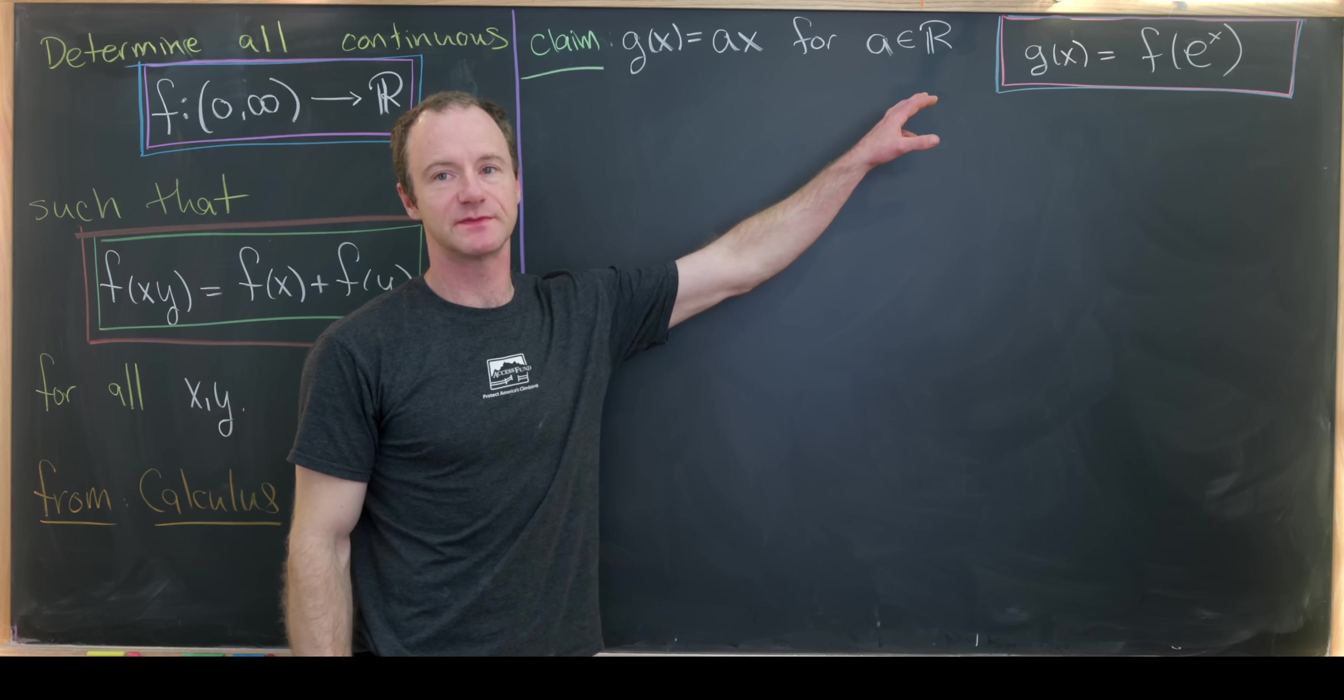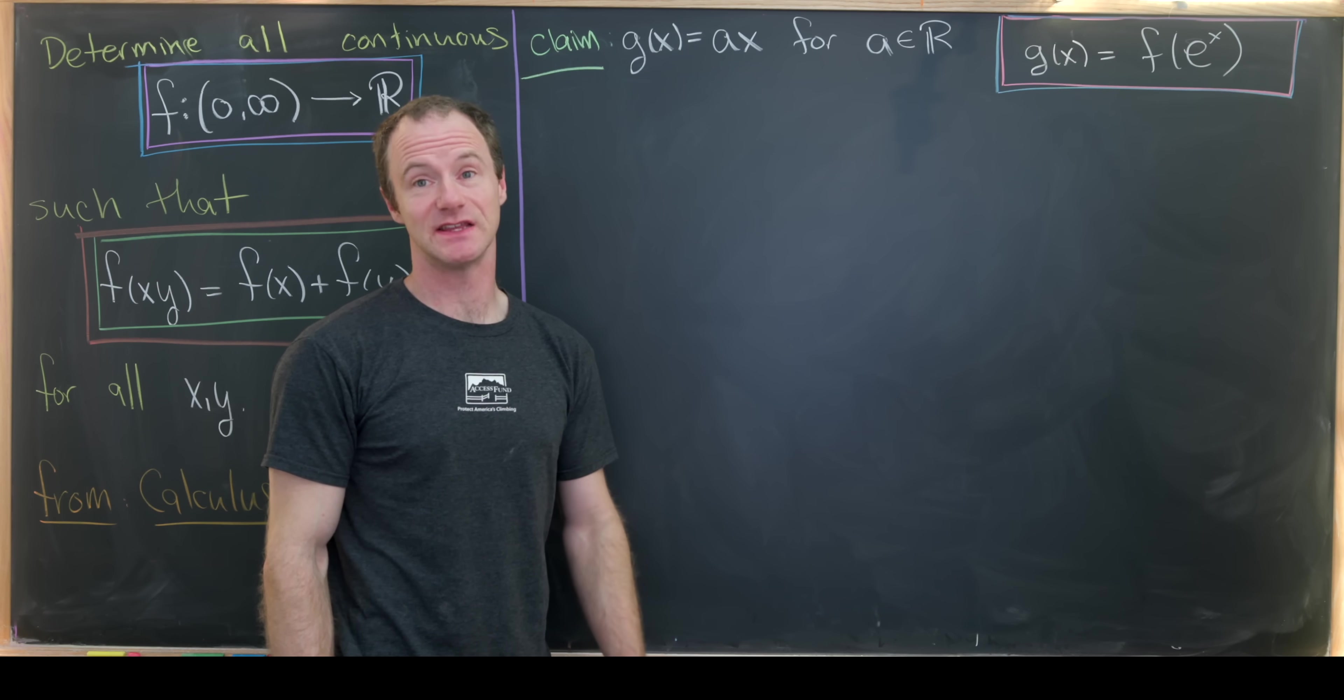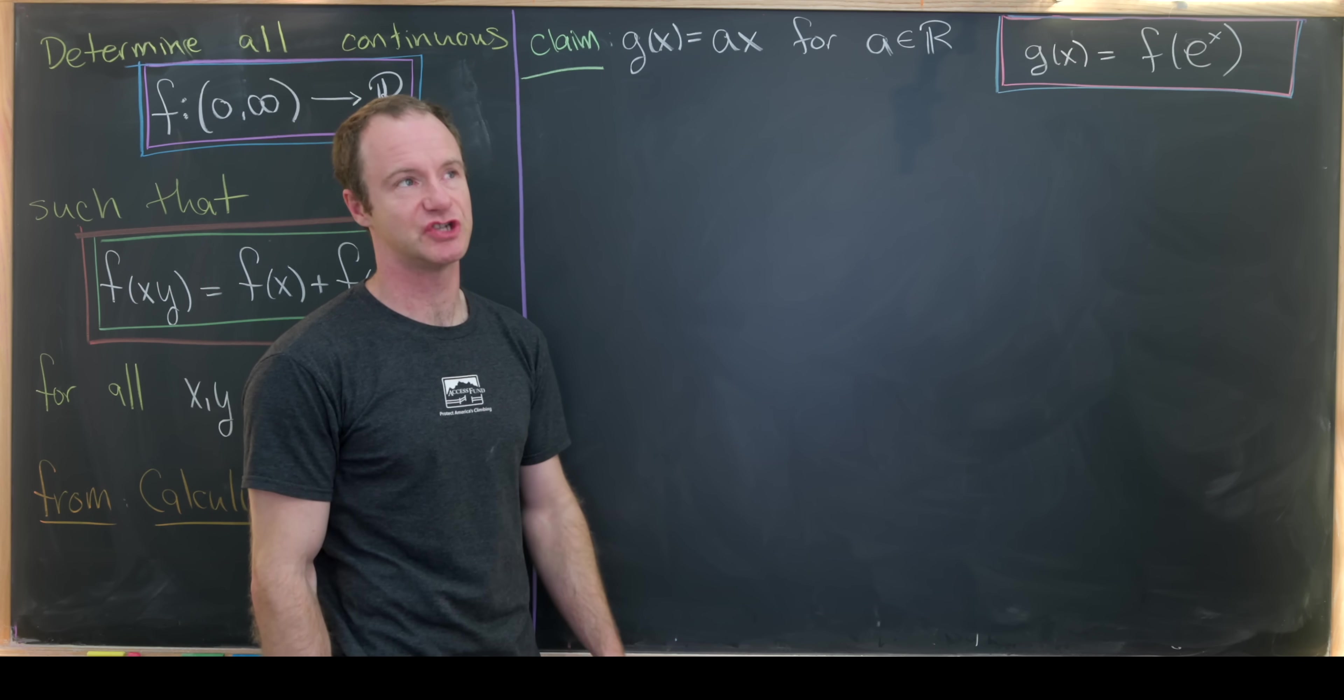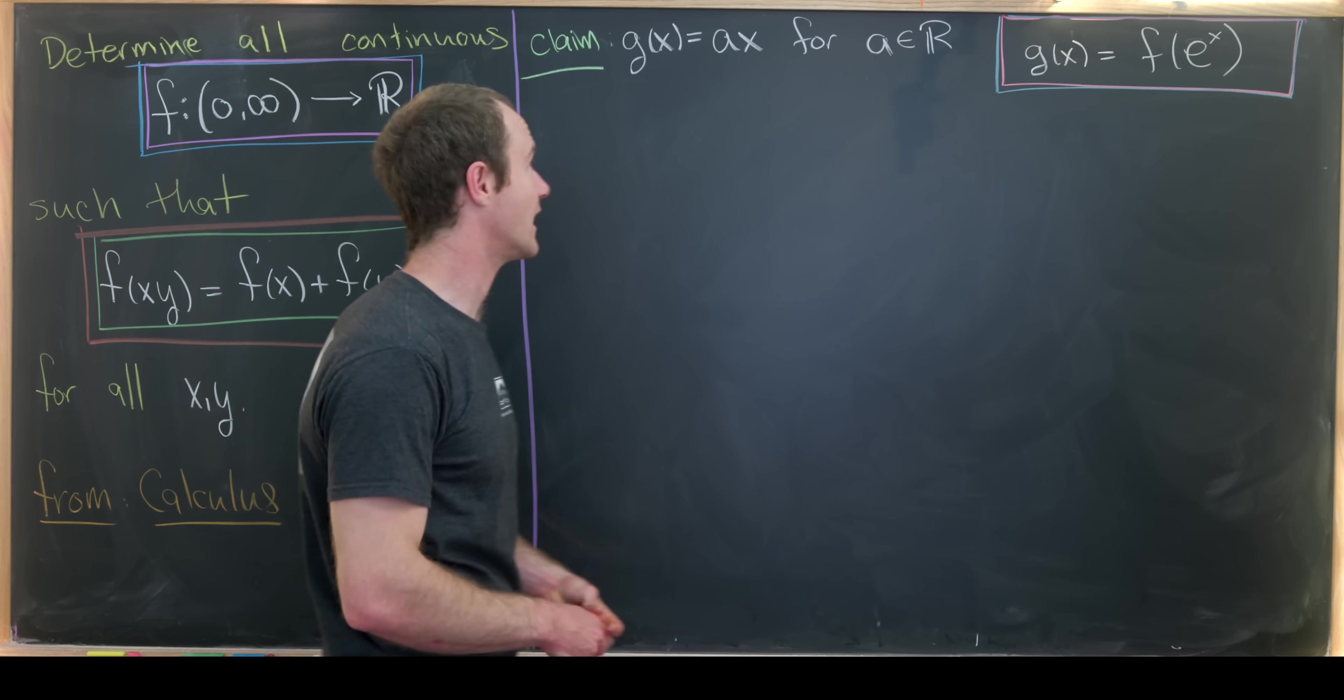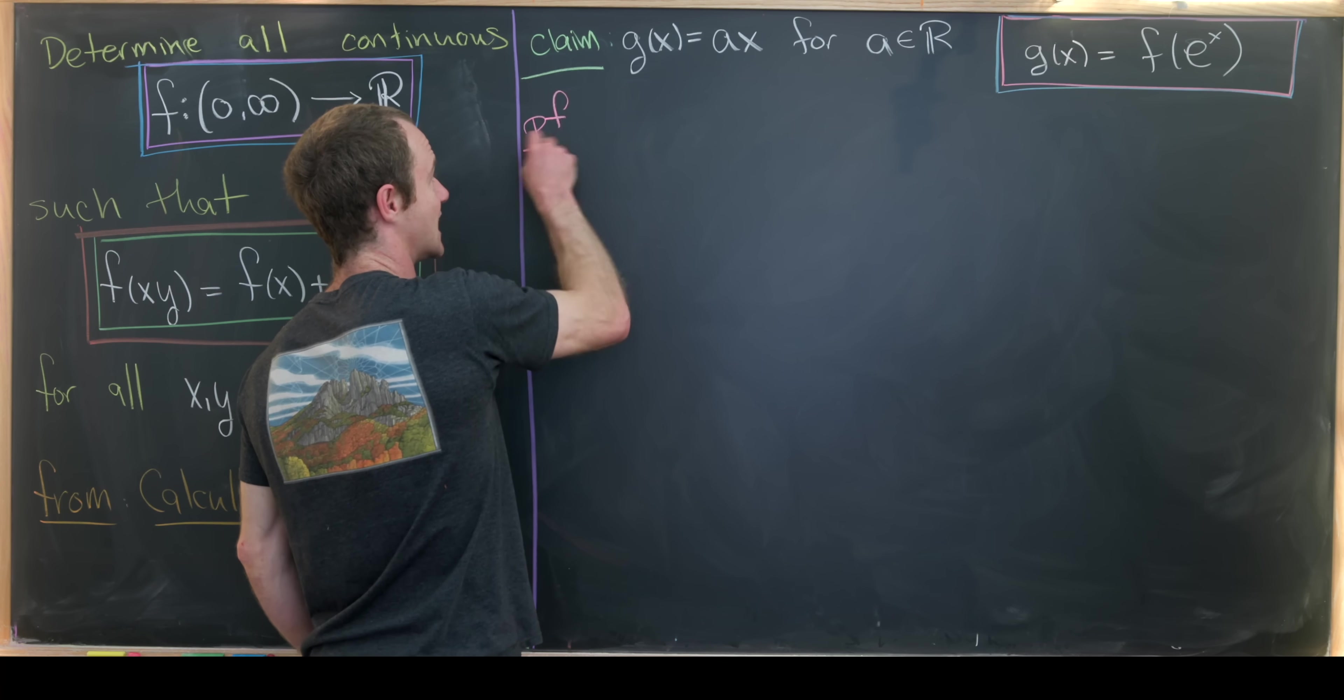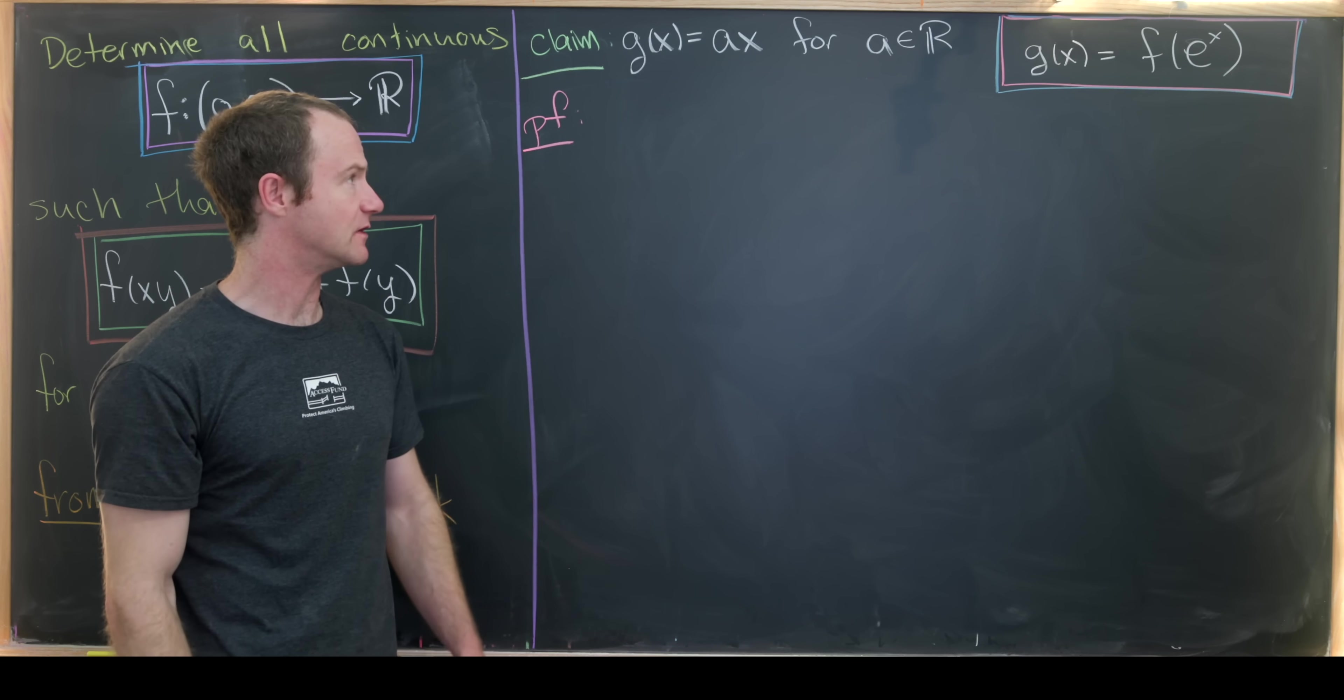In the last border we made the substitution g(x) equals f(e^x). And then we saw that g(x) satisfied the rule that g(x+y) was g(x) plus g(y). And now we'd like to prove the following claim, which is that g(x) equals a times x for some real number a. Okay, so let's see how we can do that.